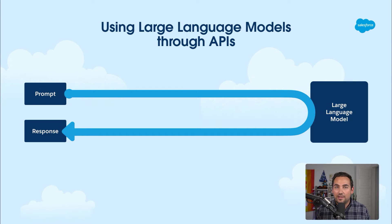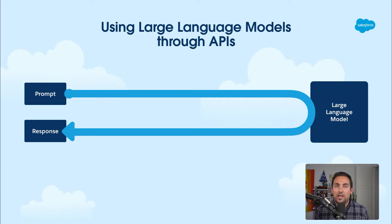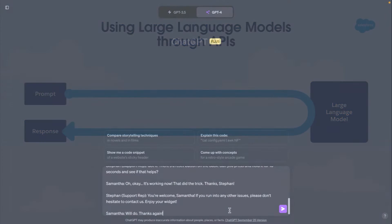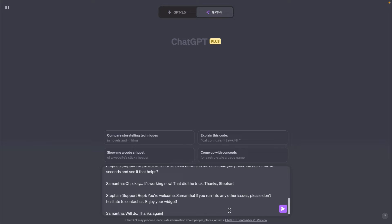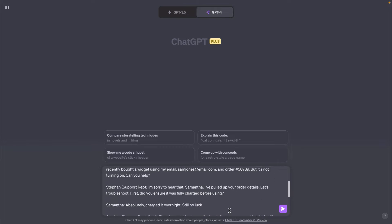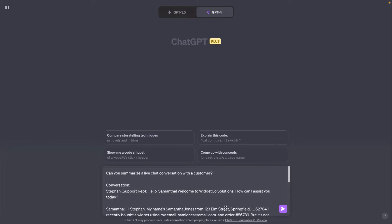Interacting with generative AI is as simple as sending a prompt to a large language model and getting a response. That puts Salesforce customers at a huge advantage because of the rich conversation history that they have with their customers and insights that they can produce. You can use tools like ChatGPT to generate responses in no time.